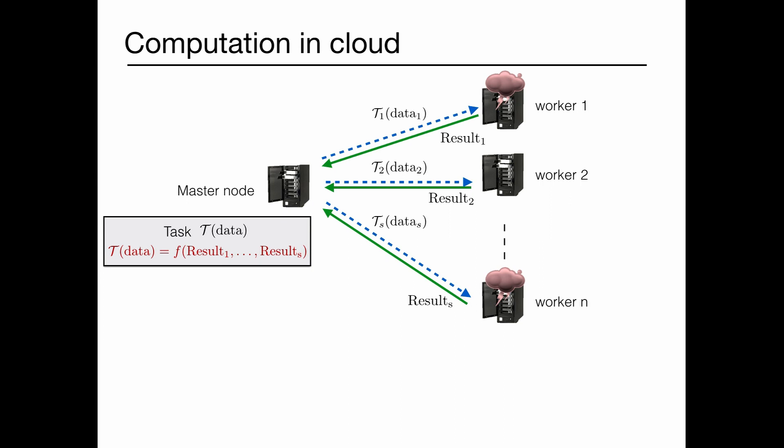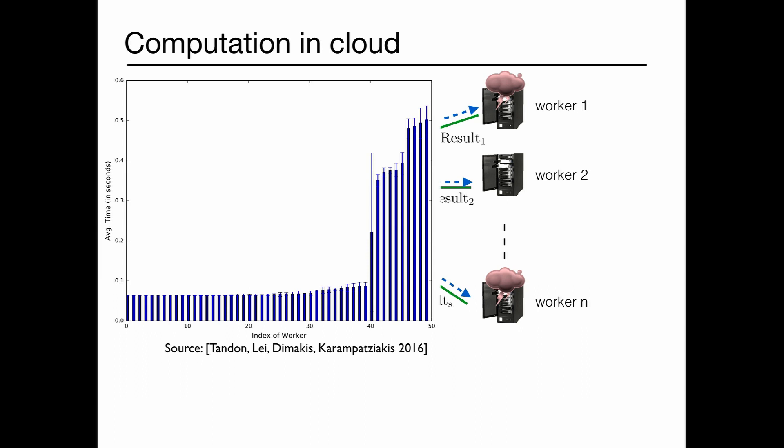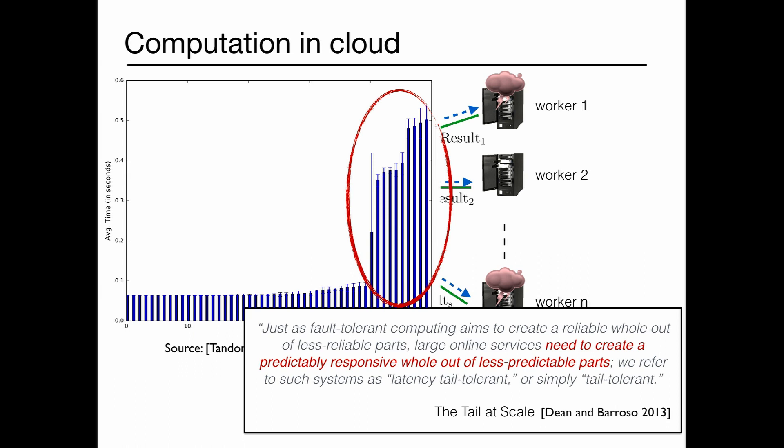What happens is, some of the time, these worker nodes are too slow. I picked up this plot from a paper by Tandon et al. from 2016. It shows that if you have about 50 servers, 40 of them are doing pretty well, but about 10 of them, that's like 20%, take a lot of time to send back results. Since the master has to wait for all workers to get good accuracy, the system is bottlenecked by the slow workers. That's a serious problem, a well-known problem. There's a fantastic survey paper by Dean and Barroso in Communications of the ACM a few years back that talks about this issue.